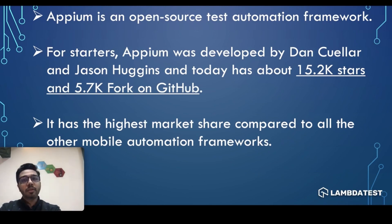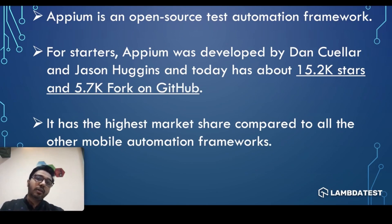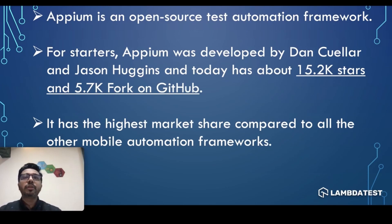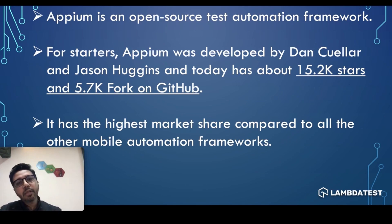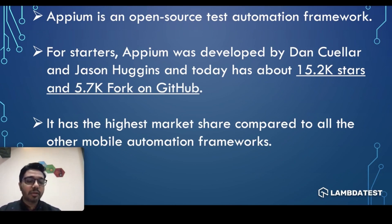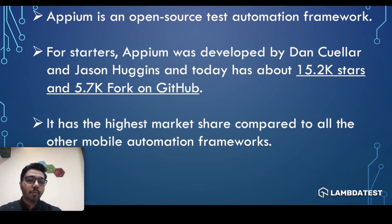Appium is open source, which means we don't have to spend any money for a license or make any initial investment to use it. It is an open source test automation framework that helps us automate scenarios related to mobile testing. It was developed by Dan Cuellar. It has a huge number of users, as you can see on GitHub, and it has the highest market share compared to all other mobile automation framework providers.